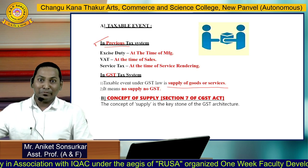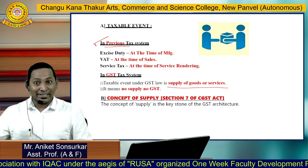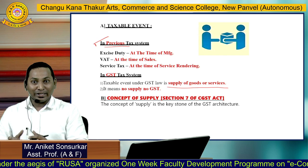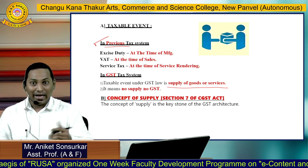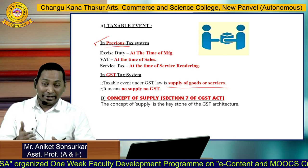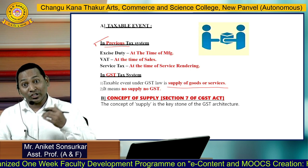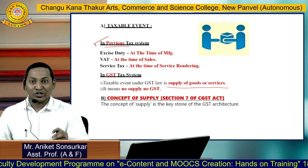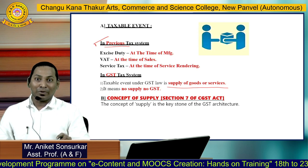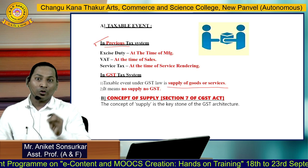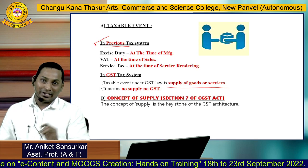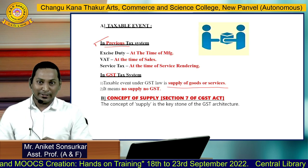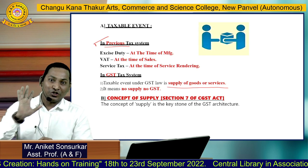In the previous tax system, excise duty was charged at the time of manufacture, VAT at the time of sales, and service tax at the time of service rendered. After the introduction of GST, all these taxes were subsumed by the government and a one nation, one tax regime was applied throughout India. GST is applicable on supply of goods or services — no supply, no GST.